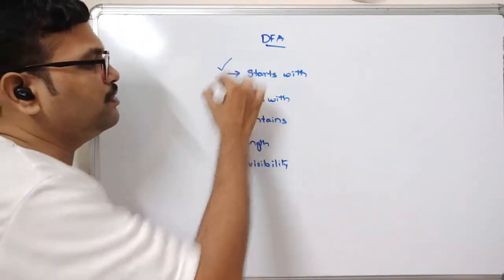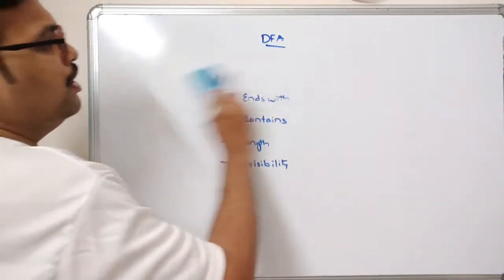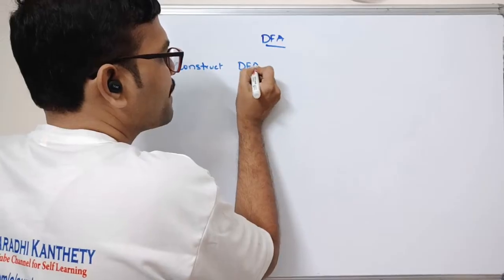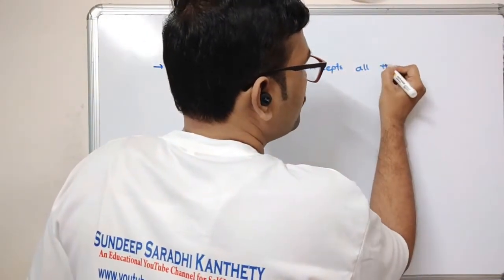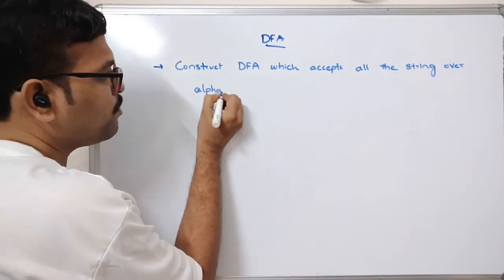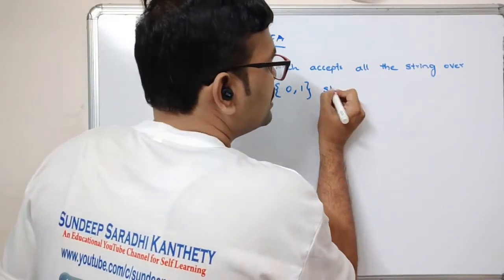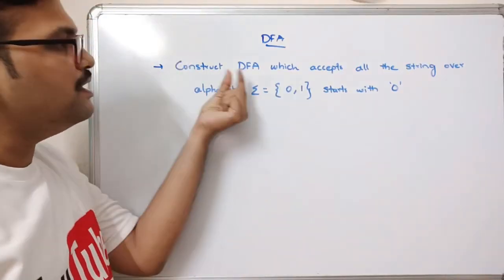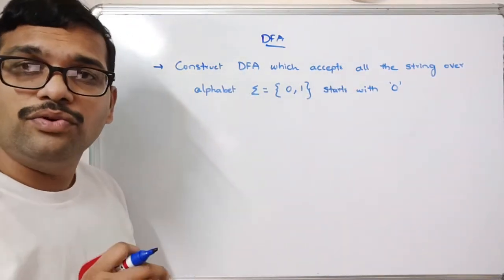We'll start with the 'starts with' category, and further sessions will cover ends with, contains, length, and divisibility. The question is: construct a DFA which accepts all the strings over the alphabet Σ = {0, 1} that start with 0.